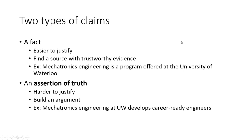There are two main types of claims you're likely going to encounter in your technical communication course. The first is a fact. Facts are fairly easy to justify — you just need to find a source with trustworthy evidence. If this isn't a fact you've personally come up with, finding a good source from a reputable place is fine. For example, if I said that Mechatronics Engineering is a program offered at the University of Waterloo, a good way to justify that would be to go to the University of Waterloo's website, find where they have information about Mechatronics Engineering, and put that into my document as a citation.